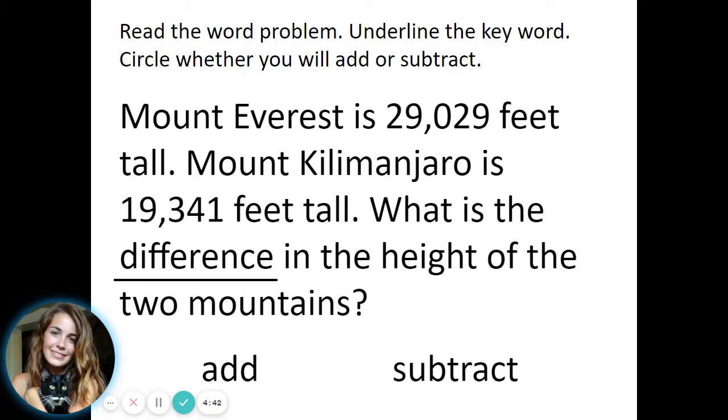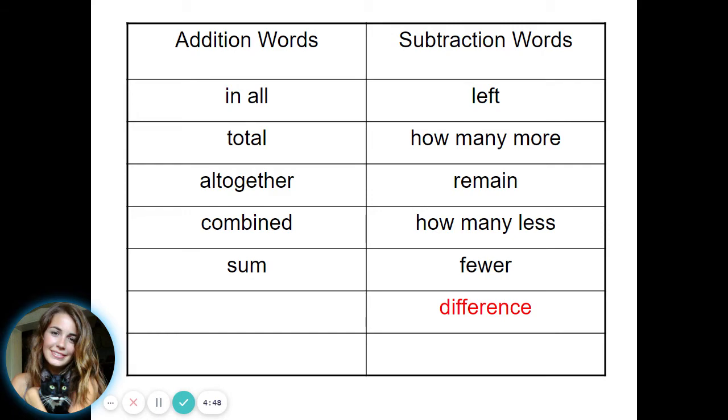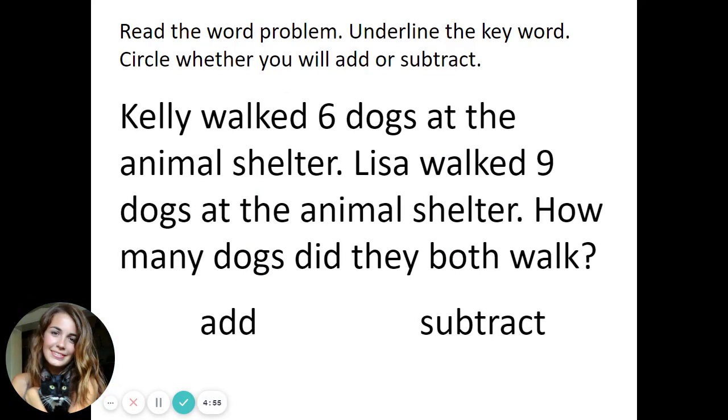Mount Everest is 29,029 feet tall. Mount Kilimanjaro is 19,341 feet tall. What is the difference in the height of the two mountains? Difference means subtract. Difference is actually what you call the answer to a subtraction problem, just like sum is the answer to an addition problem.